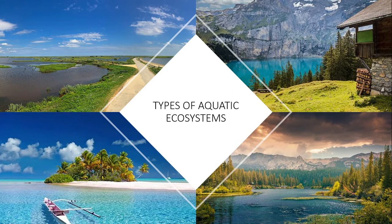Here we have four types of habitat. Can you identify them? Estuary. Lake. River. And of course, the sea. All are four types of aquatic habitat.